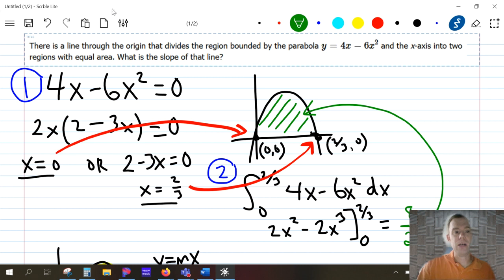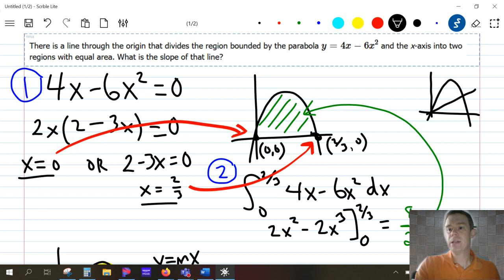So this is an example of that problem. It says there's a line through the origin that divides the region bounded by the parabola, and there's the equation, and the x-axis into two regions with equal area. What is the slope of that line? So the idea here is that we've got a parabola and a linear equation that goes through, and we want to find the slope of that line that cuts this area into two equally sized pieces.